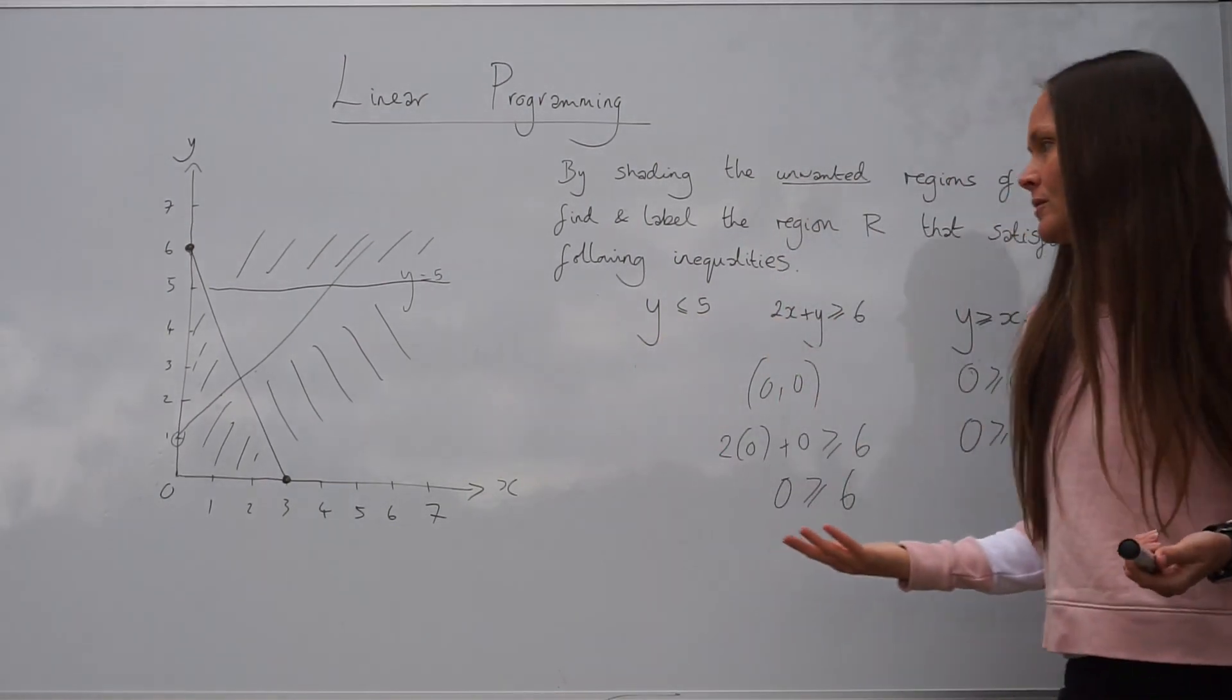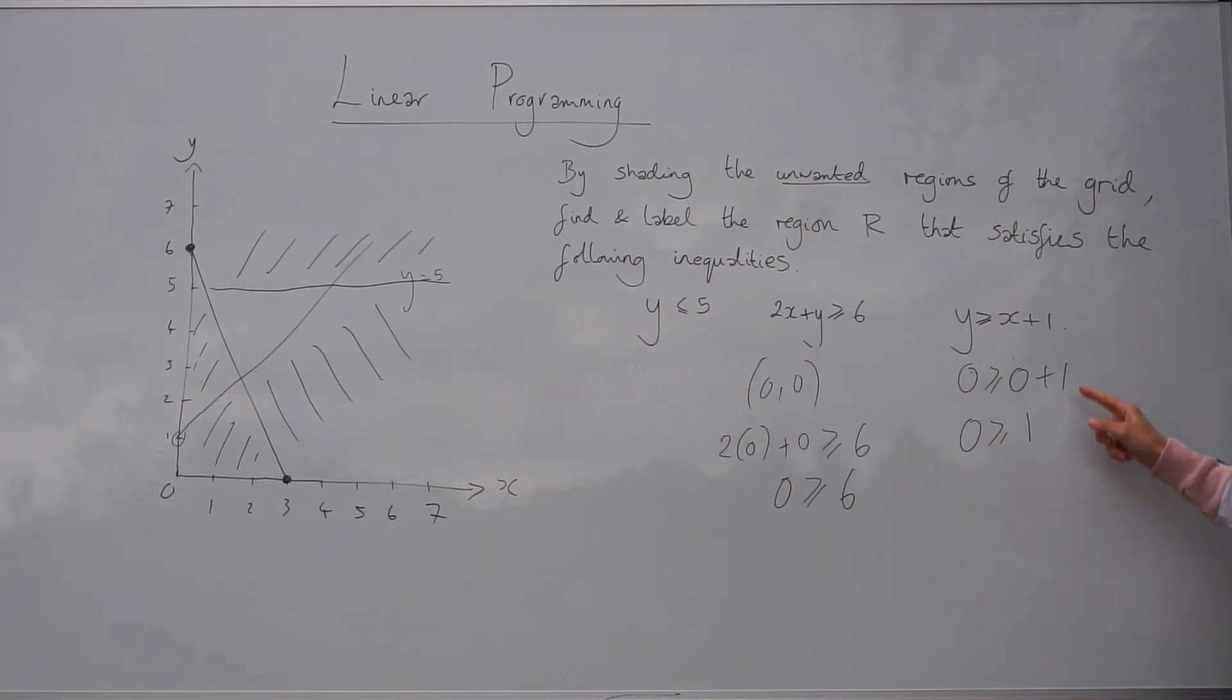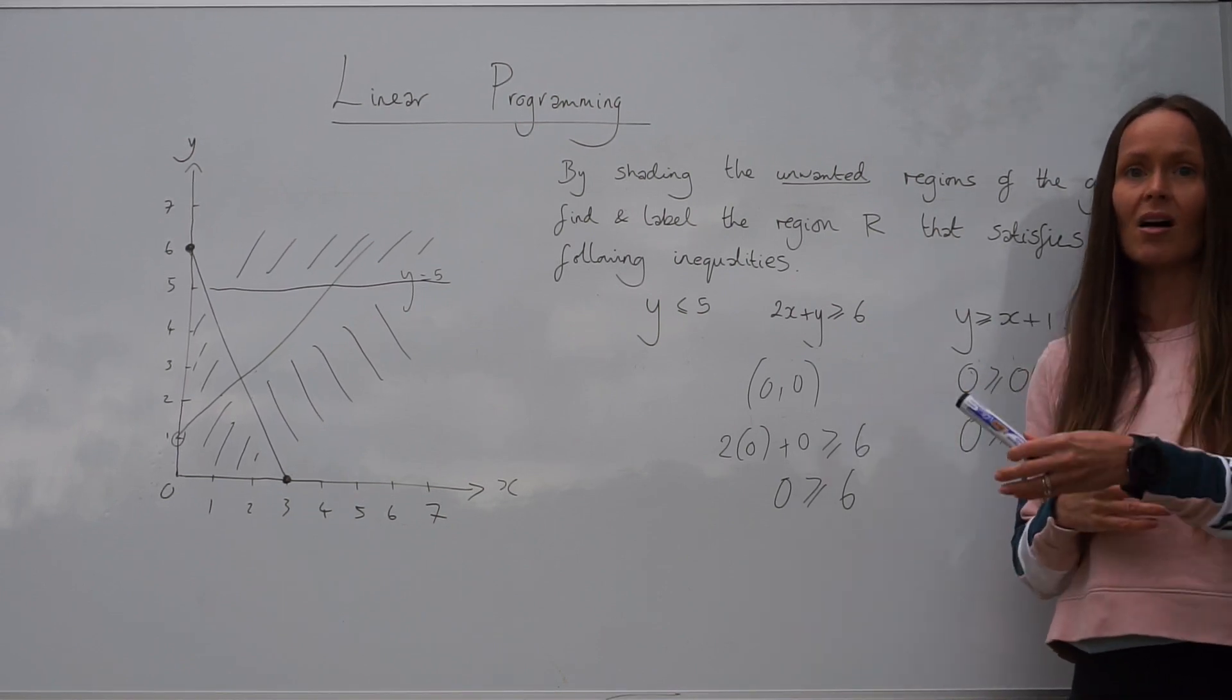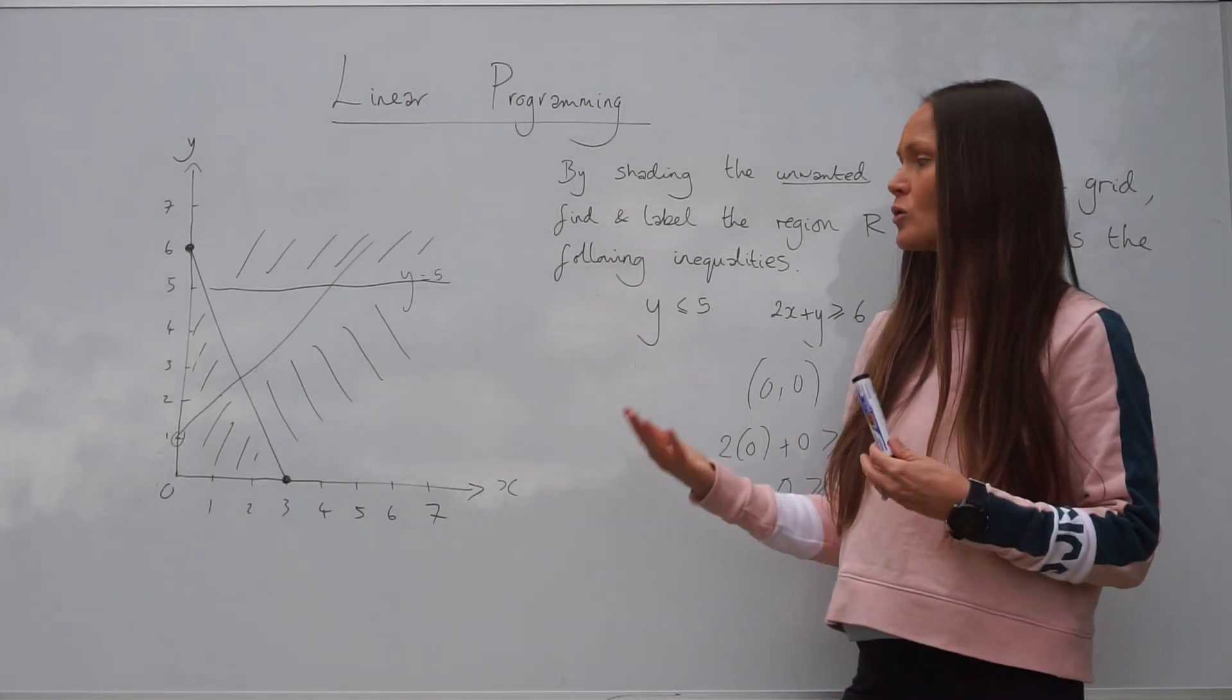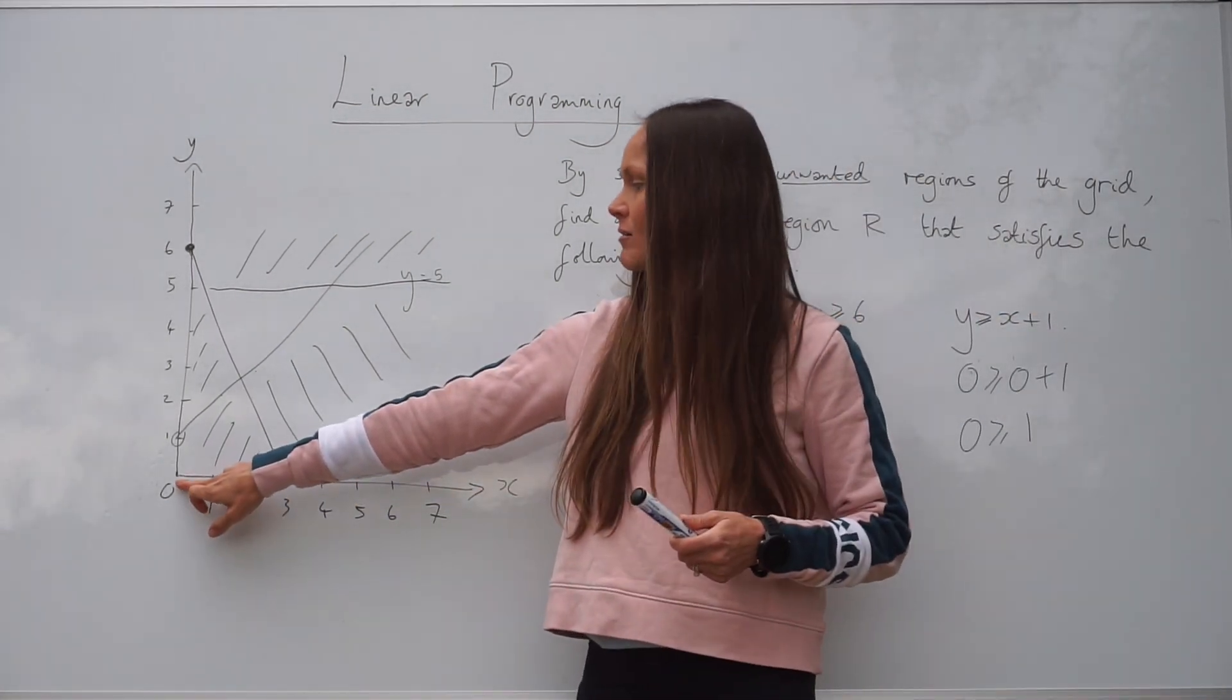If, when you substituted those numbers in, and the inequality was correct, that means you would need to shade the opposite side to where you chose the point. So we chose 0, 0 here, and it was underneath the graph.